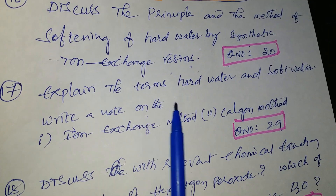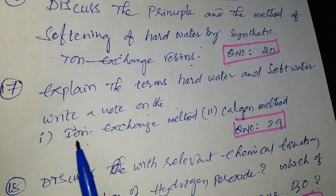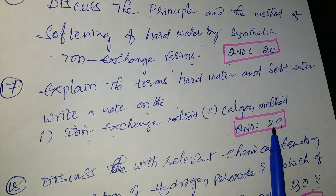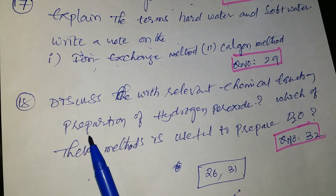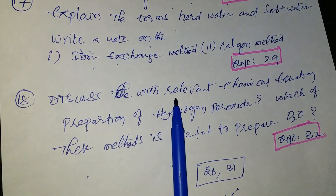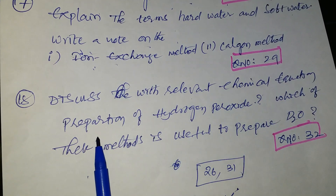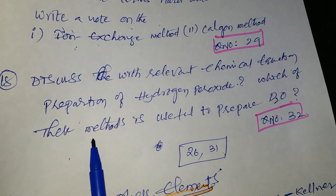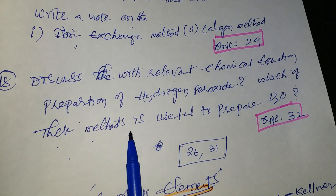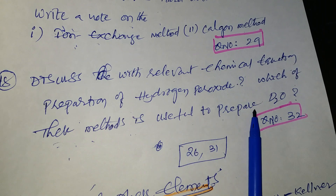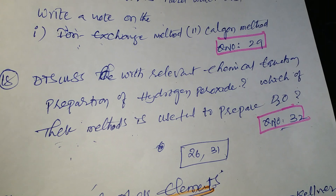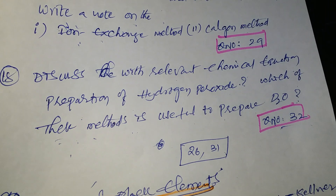Write a note on the ion exchange method and the Calgon method — question number 29. Next question: discuss with relevant chemical equations the preparation of hydrogen peroxide and which of these methods is most useful — question number 32 from the Telugu academic textbook.